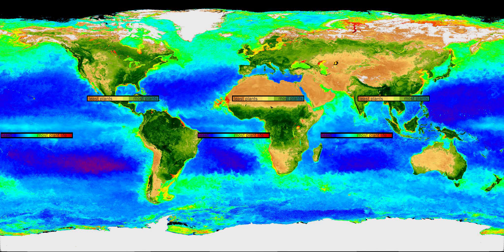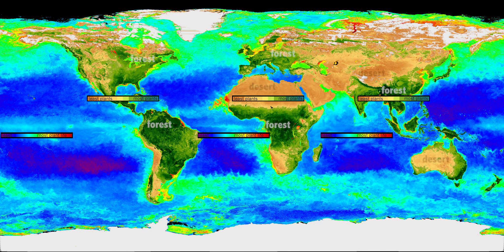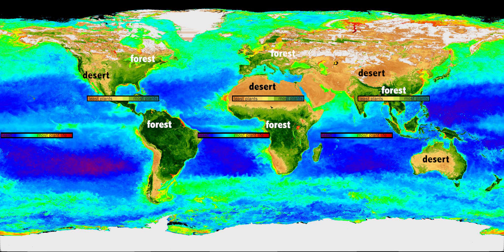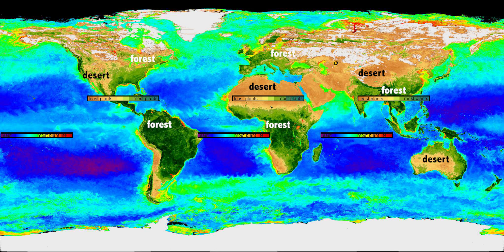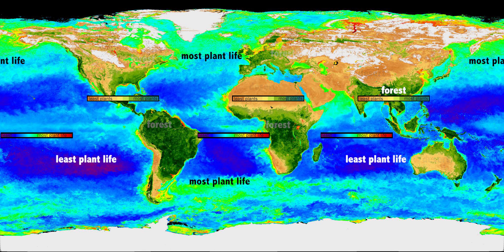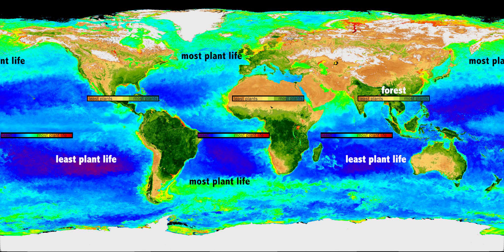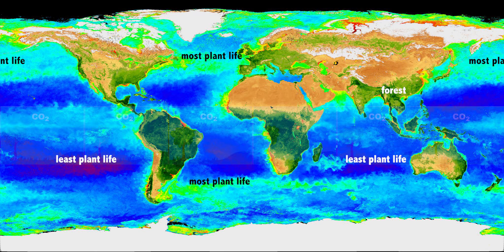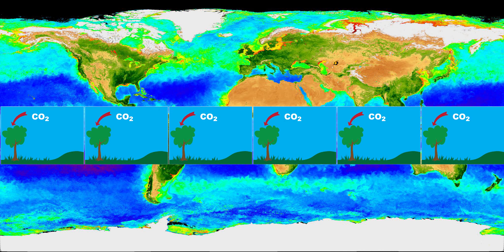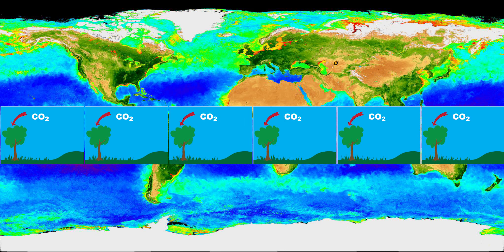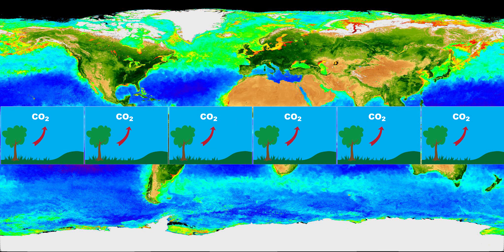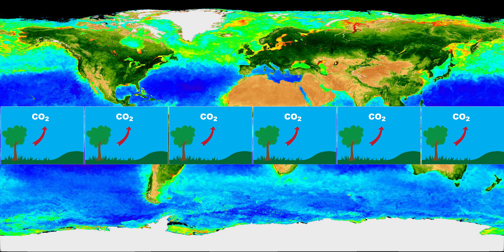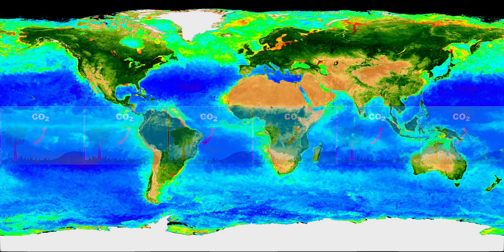This image shows plant life measured by satellites. Plants on land are shown in green, while plant life in the ocean is colored green, red, and yellow. Plants take in carbon dioxide from the atmosphere, use it in photosynthesis, and release it when they die or go dormant.